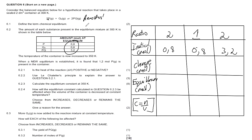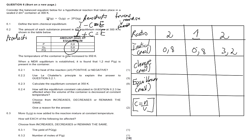Remember: when the forward reaction is favored, reactants use i minus c equals e. But if the reverse reaction is favored, reactants become i plus c equals e, because reactants increase. Conversely, if the forward reaction is favored, products are i plus c equals e, but if the reverse reaction is favored, products become i minus c equals e. So favoring the reverse reaction changes the entire equation.